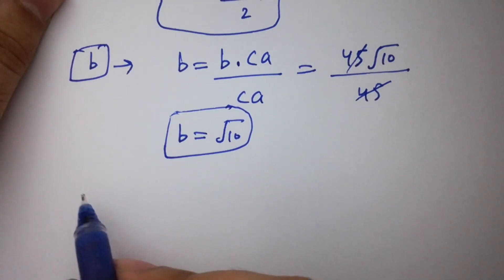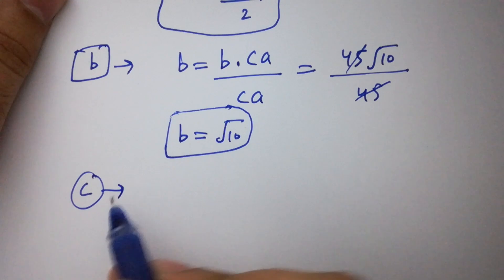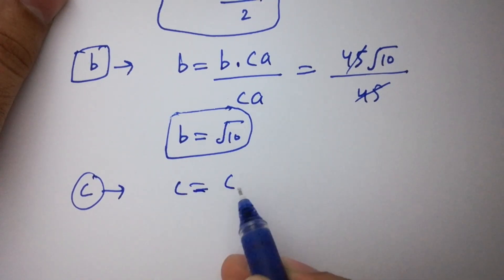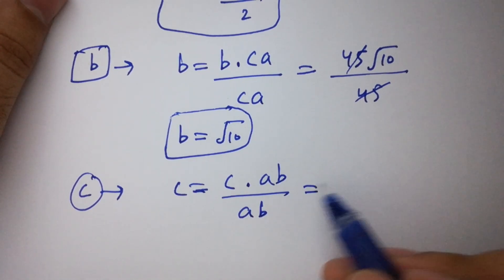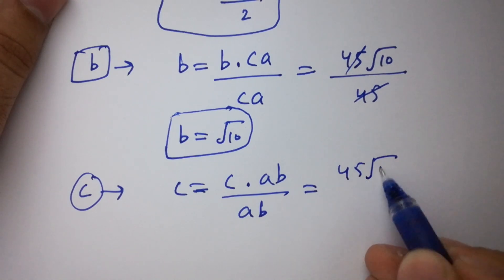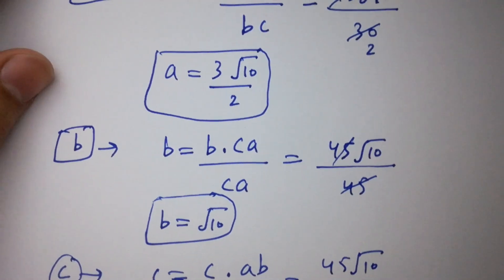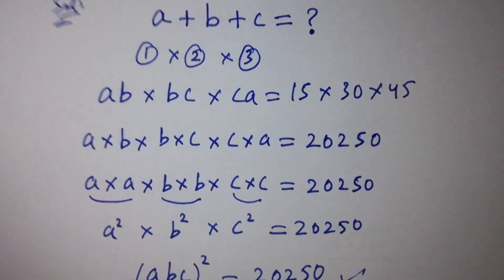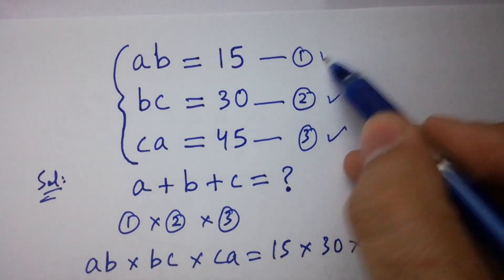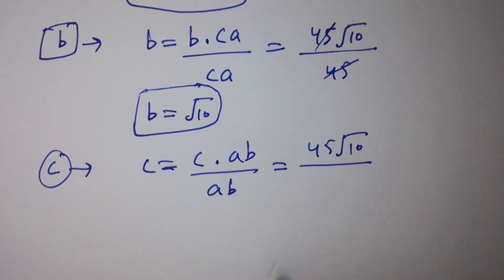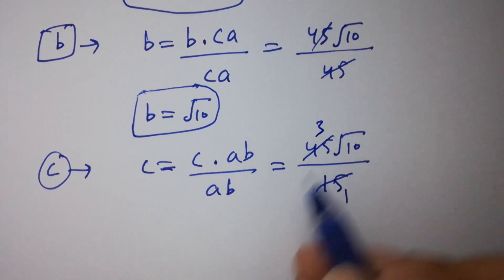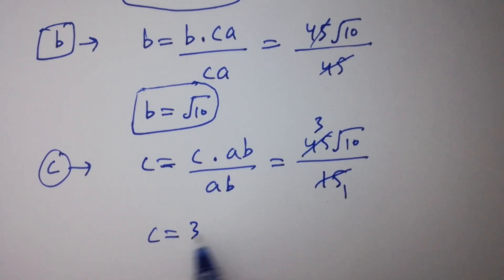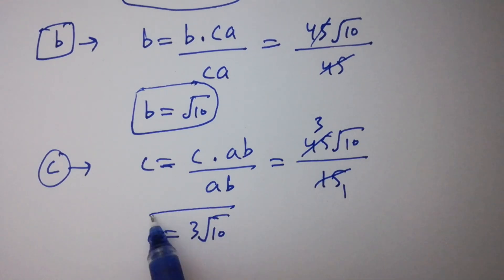Next, to find c: c equals abc over ab. So c equals 45 square root of 10 over ab. Since ab equals 15, we have 45 divided by 15 equals 3, giving c equal to 3 square root of 10.